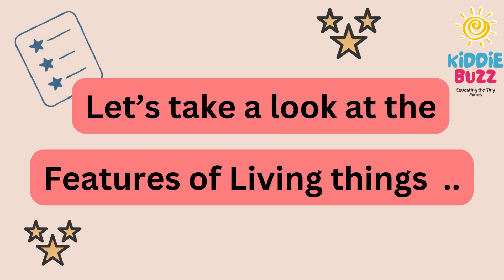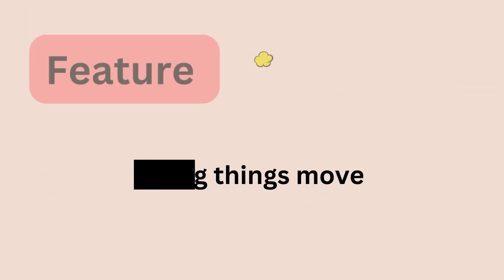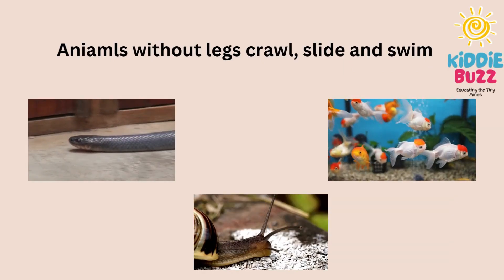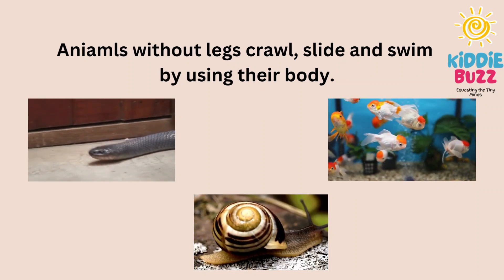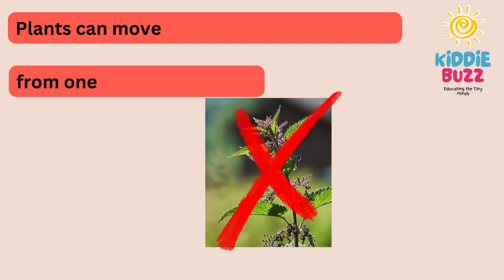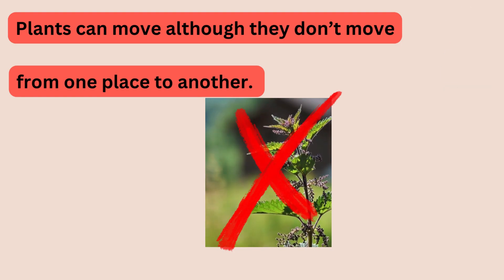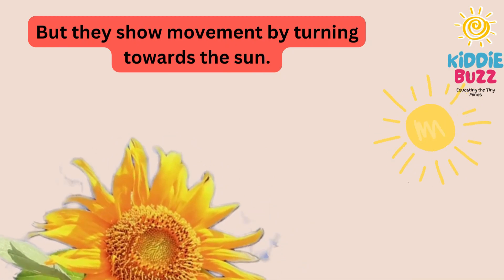There are certain features that differentiate living things from non-living things. Let's take a look at the features of living things one by one. The first feature is living things move. Humans and animals use their legs to move, while animals without legs crawl, slide, and swim using their body. Plants can also move, but they don't move from one place to another — they show movement by turning towards the sun.